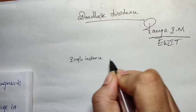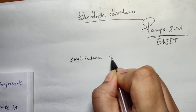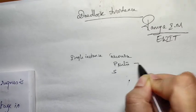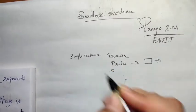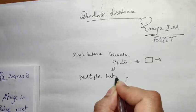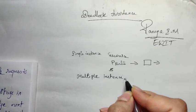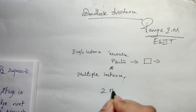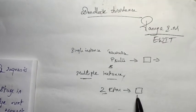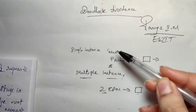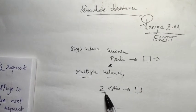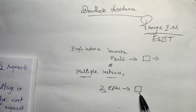Single instance means if a single scanner or printer — the resource can be a printer, scanner, or anything — if a single printer is connected to a computer, then we call it a single instance. Multiple instance means if two or more printers, or two or more RAMs are connected to a computer, then we call it a multiple instance — two resources connected to a single computer.